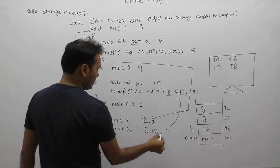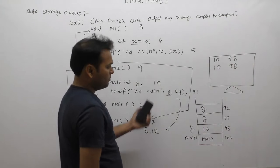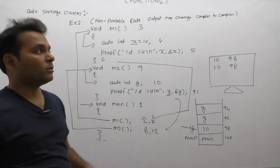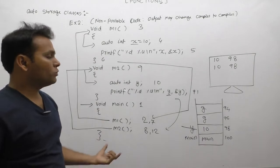Control goes back to main function again and performs deallocation. This is the expected output of this program according to auto storage class.